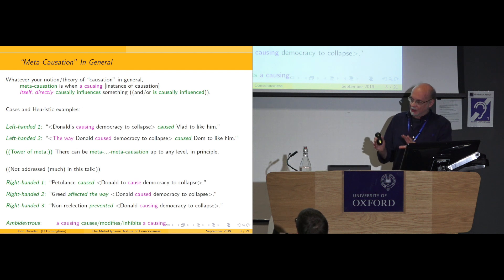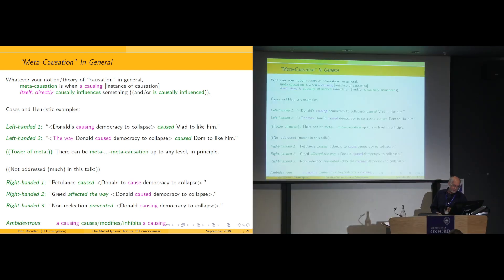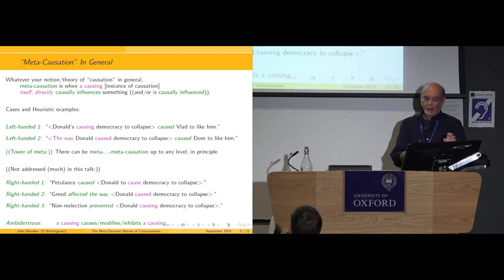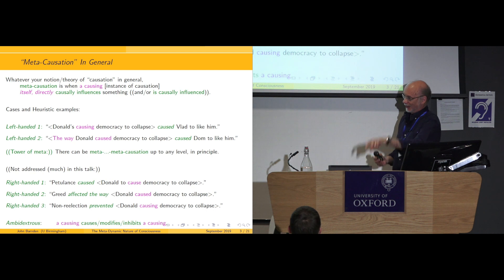So whatever your notion of causation is in general, it doesn't matter. Meta-causation is when a causing, an instance of causation itself directly as an entity, causally influences something. And just to illustrate the structure of the idea, for some reason certain people came to my mind when I was writing the slide. Donald's causing democracy to collapse caused Vlad to like him. The point being, it's the causing of democracy to collapse that caused Vlad to like him. Or more subtly, it could be the way Donald caused democracy to collapse caused Dom to like him. Dom is the resident of number 10 Downing Street, by the way. And then there is a possibility, which I'm not going to talk about so much. I call that left-handed meta-causation because the purple causing is on the left. The green causing is the meta-causation. Right-handed is where it's around the other way. So petulance caused Donald to cause democracy to collapse.